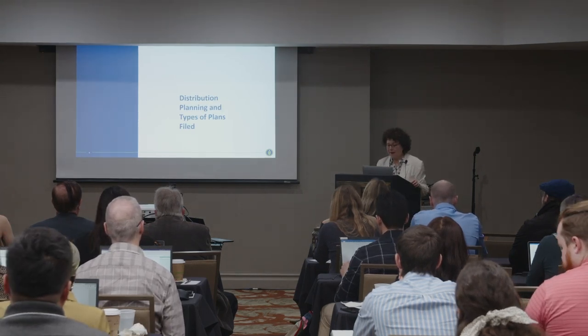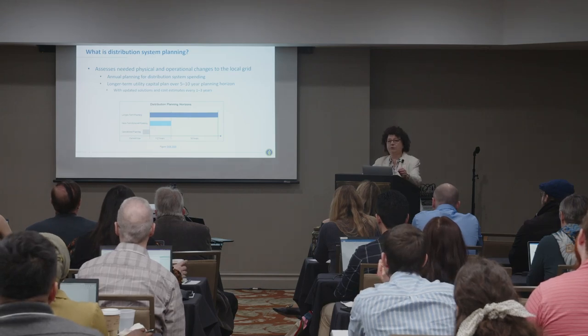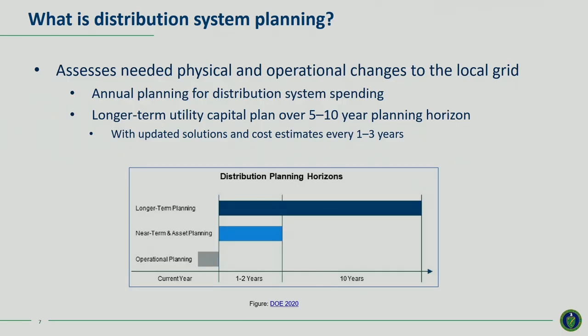So what is distribution planning, and what kinds of plans are regulated utilities required to file? Distribution planning assesses the physical and operational changes needed to meet the needs for safe and reliable service. At its core, it's typically an annual process that the utility runs with a one to two year time frame, but there's also a longer-term capital plan because some investments, like substations, take a long time to plan — at least six years — to get the equipment and build a facility. Utilities have done distribution planning since they first began operating electricity systems.